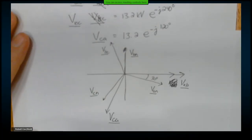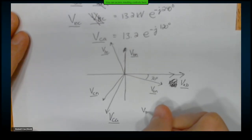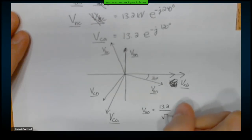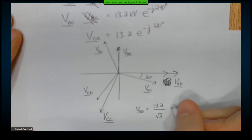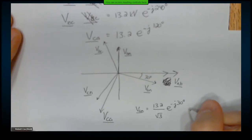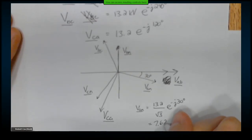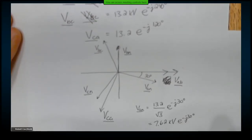So what does that tell us for each of those? Well, VAN is going to be 13.2 divided by the square root of 3, with an angle of negative 30 degrees. So calculating that: 13.2 divided by square root of 3 is 7.62 kV at negative 30 degrees.